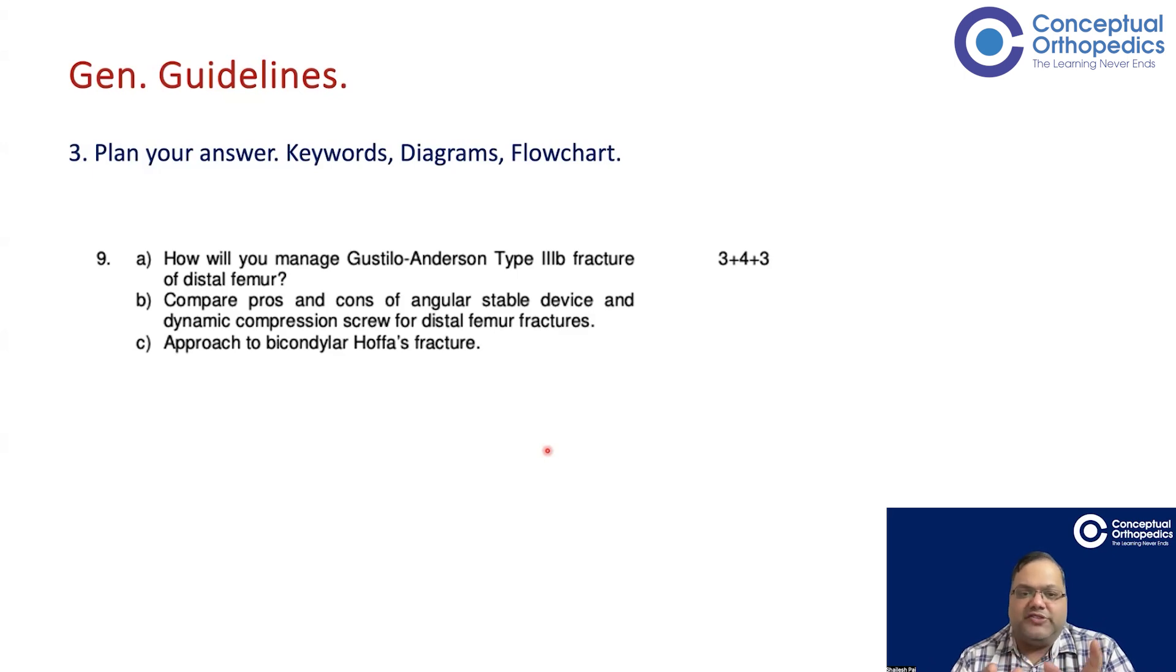Approach to bicondylar Hoffa's fracture. This is where a flowchart will help. Bicondylar Hoffa's fracture. So clinical, that is what I'm going to do. What are you going to look out for? What are the investigations? Next arrow mark, investigations. Investigations, you are obviously going to get an x-ray, you're going to get a CT scan. Then you are going to see the type of fracture. Now type of fracture type 1, this is the treatment. Type 2, this is the treatment. Type 3, this is the treatment. That's it.